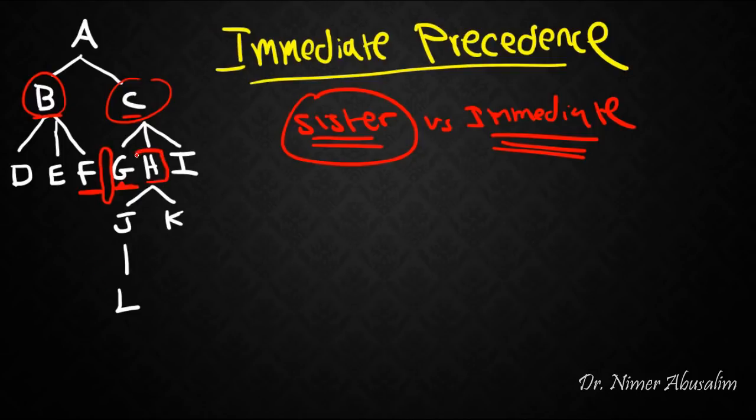Let's look at H and I. H immediately precedes I because nothing intervenes. And also it sister precedes it, and it precedes it. So then in this case, all three are correct. All right.